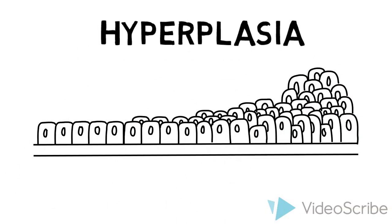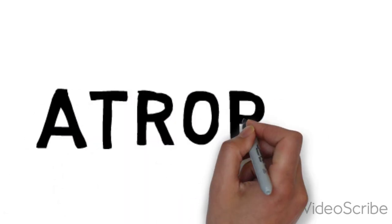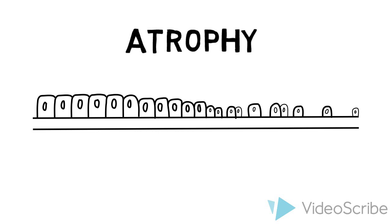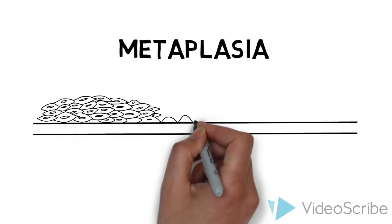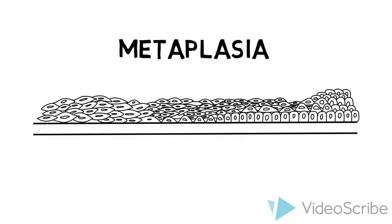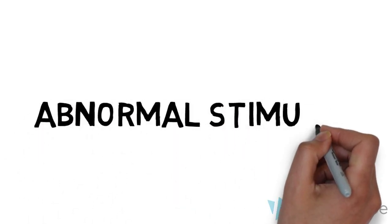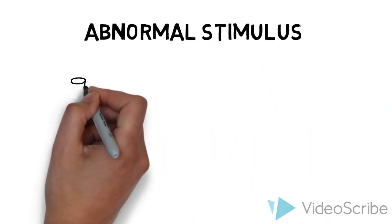Cells can also shrink or decrease in number. We refer to this as atrophy. And finally, cells can also change type. We refer to this as metaplasia. These changes occur due to some abnormal stimuli to the cells.